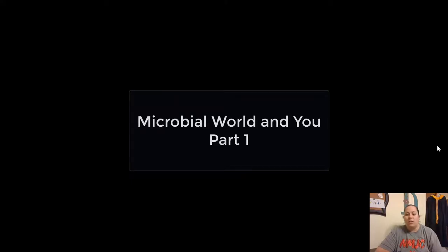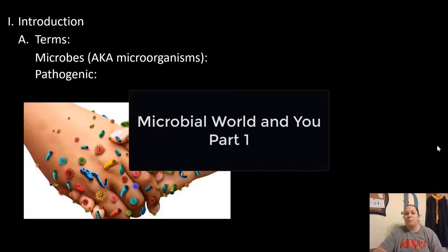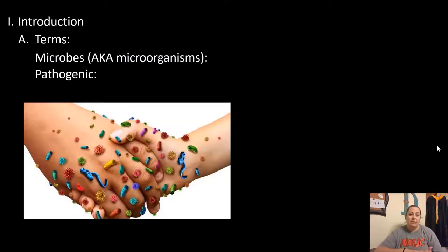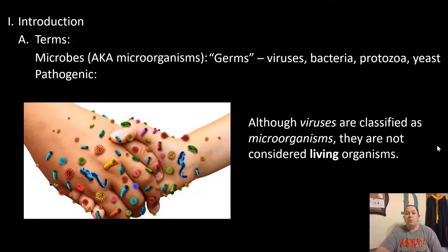Welcome to microbiology. We're going to be looking at chapter one, which gives us an overview of the microbial world. We want to look at some terms. These terms include things like microbes, also known as microorganisms, and they're also termed a lot of times as germs. These do include things like viruses, bacteria, protozoa, and yeast.